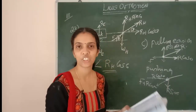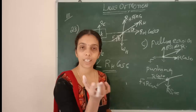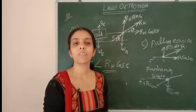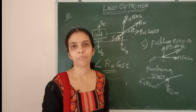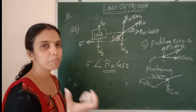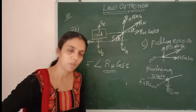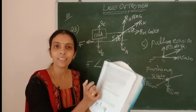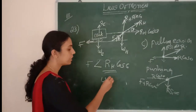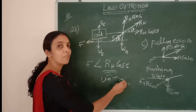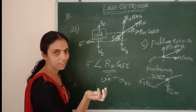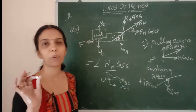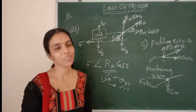A cricketer moves his hand backwards while holding a catch. If the hand does not move, the ball comes to rest suddenly — the impulse effect (F × ΔT) is large, causing more pain. By moving the hand backward, the velocity decreases gradually rather than stopping suddenly. This increases the time interval ΔT, reducing the force and thus reducing the pain in the hand.